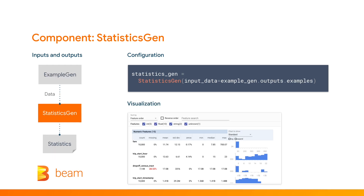Next, we have StatisticsGen. StatisticsGen makes a full pass over the data using Beam — one full epoch — and calculates descriptive statistics for each of our features. To do that, it leverages the TensorFlow Data Validation library, which includes support for some visualization tools that you can run in a Jupyter notebook. That lets you explore and understand your data and find any issues that you may have. This is typical data wrangling, the same thing we all do when we're preparing our data to train our model.